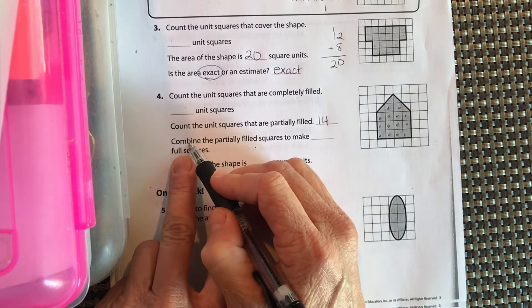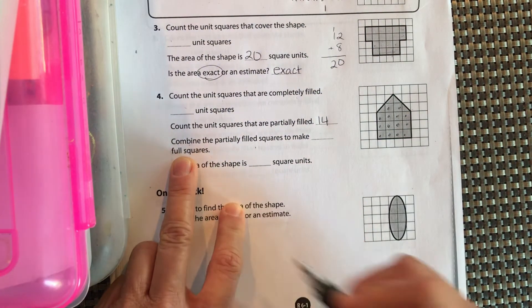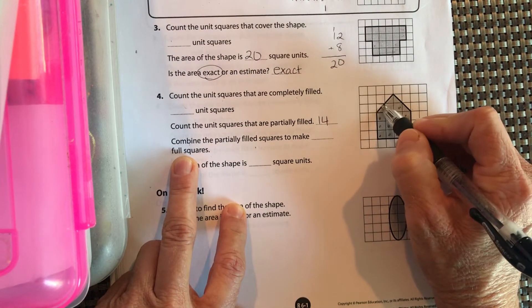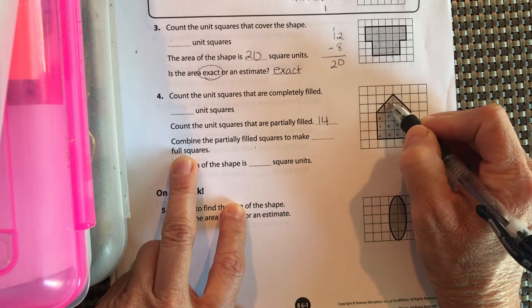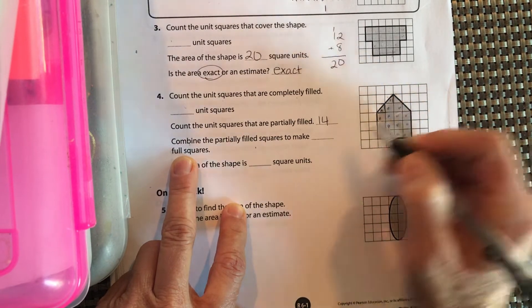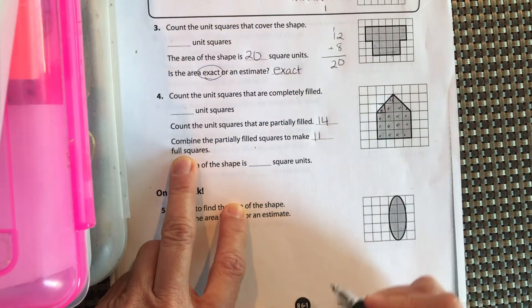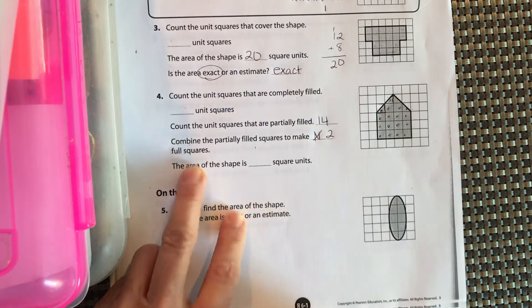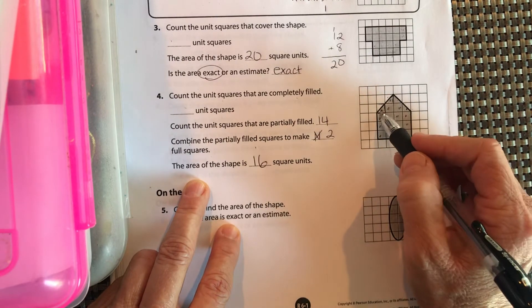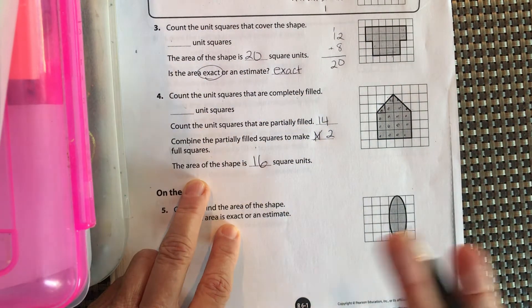Then combine. That's what we did up here. We put these two together. Combine the partially filled squares to make full squares. Okay, so we got, see how this is like, that's your whole square. Half of that is filled in and half of that is filled in. So if we were to take this, that would fill that in right here. So those two make one. These two make one. Those are tally marks, so that is two, right? So the area of the shape is 16 square units. We had 14 filled in completely. And then we put those two and those two together, four halves, which made two holes.